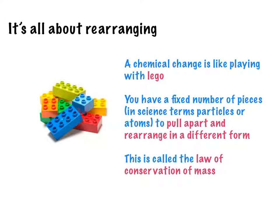I like to think of chemical change as being like playing with Lego. If I gave you 30 pieces of Lego and said make something, and then said right, now take those pieces apart and make something new — that is what a chemical change is all about. We pull them apart and readjust them, make a different pattern, but we still end up with the same number of Lego pieces. You have to use all 30 pieces every time. This shows us that the law of conservation of mass exists — we can't leave atoms out when doing a chemical change.